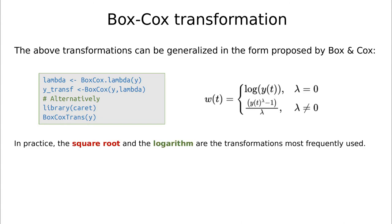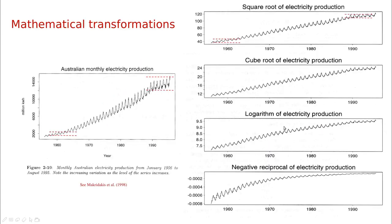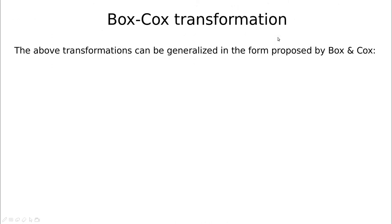So in practice, the square root and the logarithm are transformations most frequently used, so sometimes extracting the optimal value of lambda is distorting the data and it's not very informative. So I prefer the logarithm among the others, and if the logarithm is not working well, as we have seen in this example here, I would go to the square root.